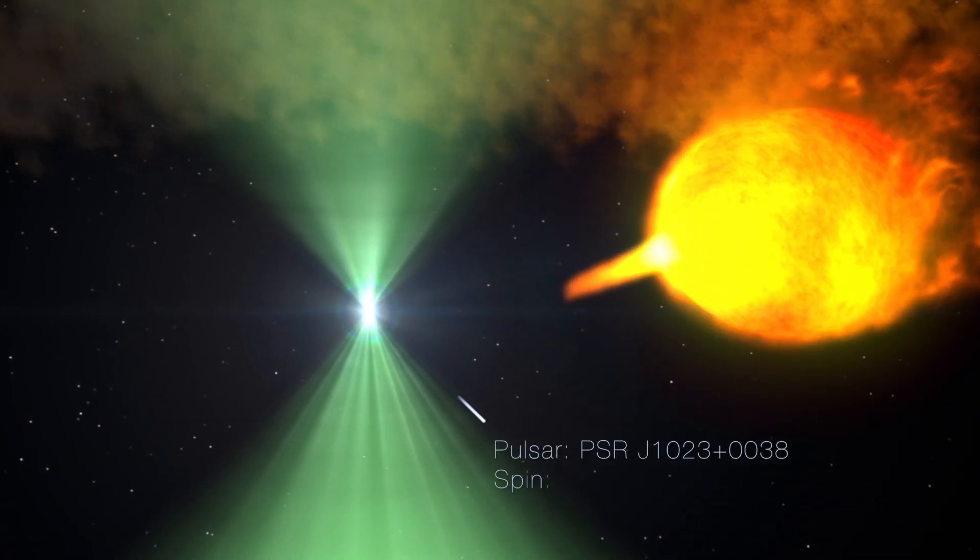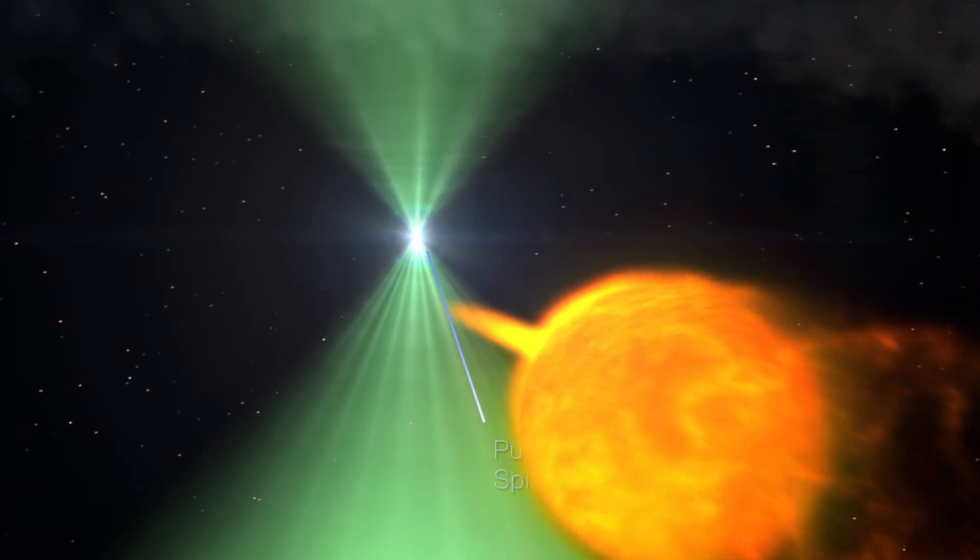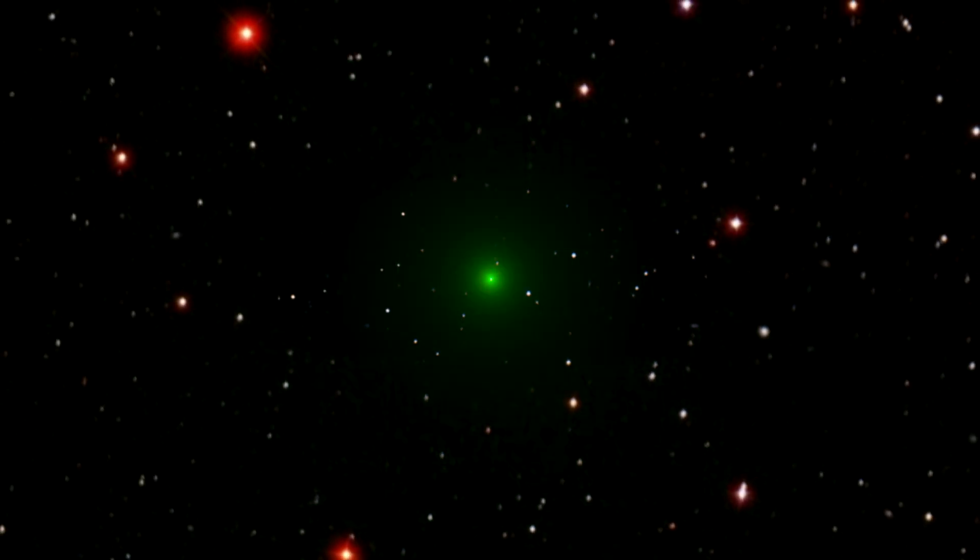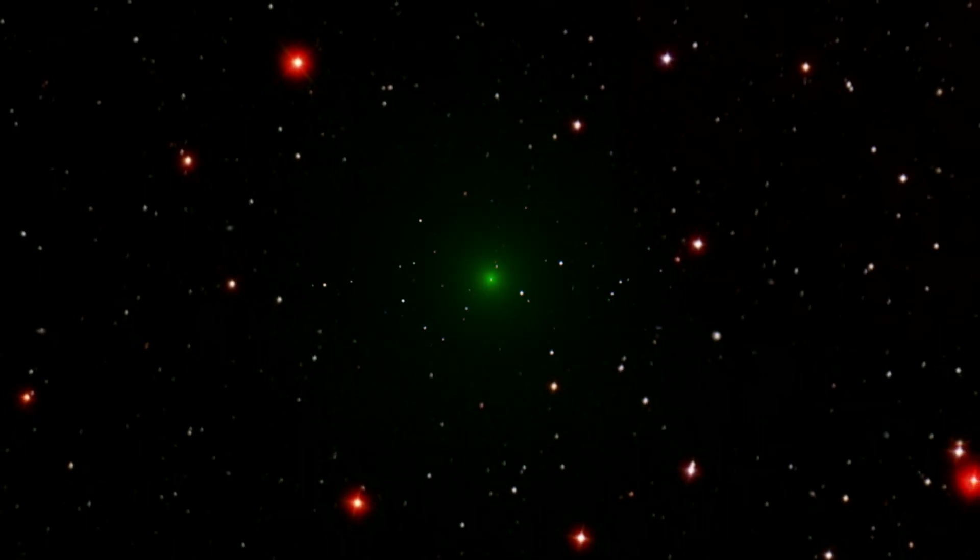Thanks to its rapid rotation and intense magnetic field, the pulsar produces a strong radio signal, which is how astronomers first discovered it. Many similar binaries are known. What's strange about this one is that sometimes the radio beacon just disappears.